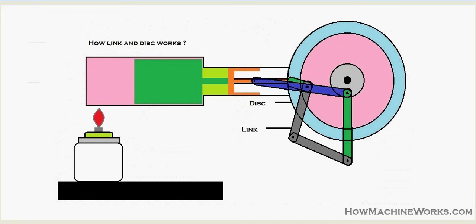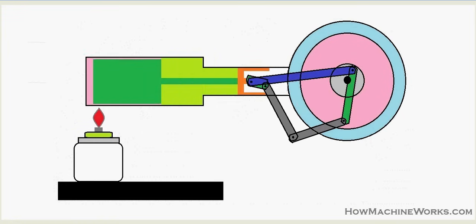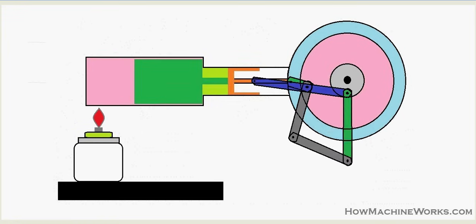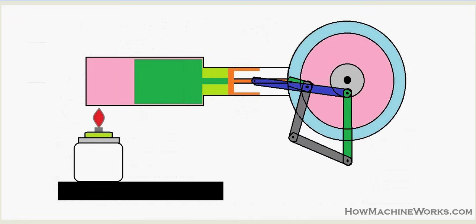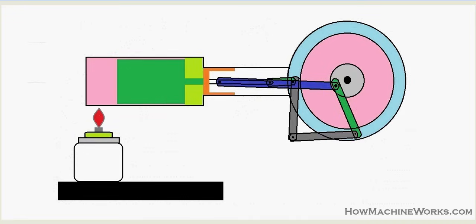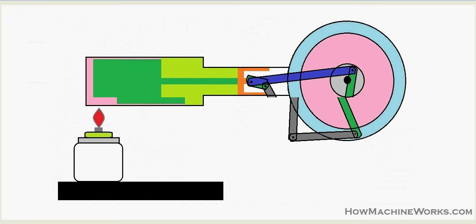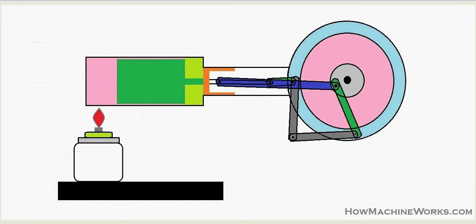There are also ash-colored links and another green-colored link connected towards the disc. As both pistons move, the links connected to them also move, and energy gets transferred from the pistons towards the disc. During idle strokes, the disc transfers energy back towards the power piston and displacer piston to keep the engine functioning — resulting in the continuous movement of the engine.